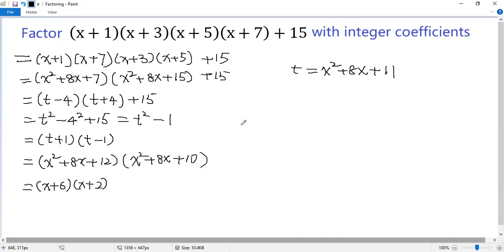using the quadratic formula, we know its roots are x equals negative 8 plus minus the square root of 64 minus 40 divided by 2. We can simplify it as negative 8 plus minus 2 square root of 6 divided by 2, which is negative 4 plus minus square root of 6.